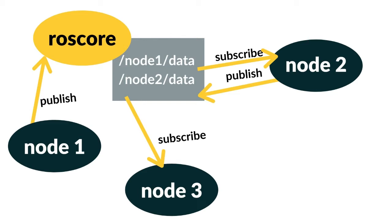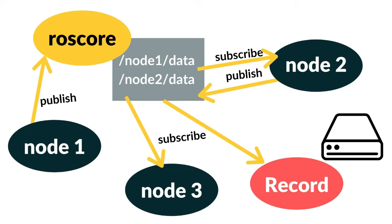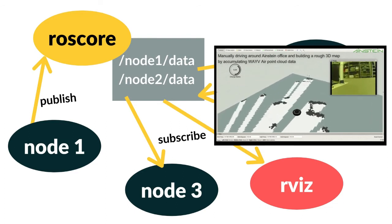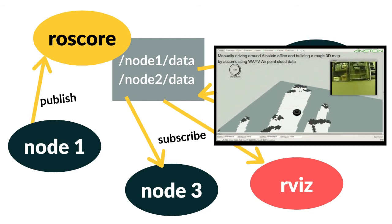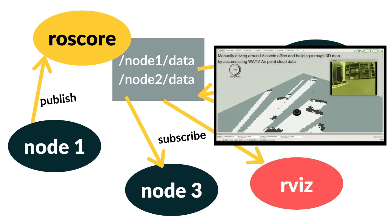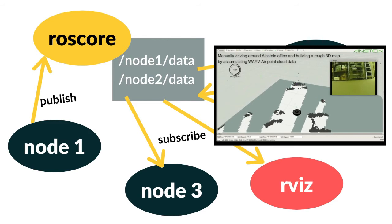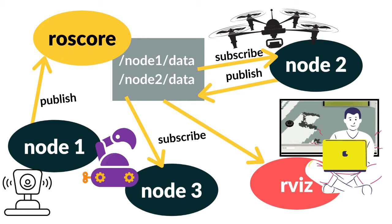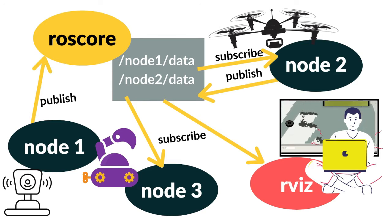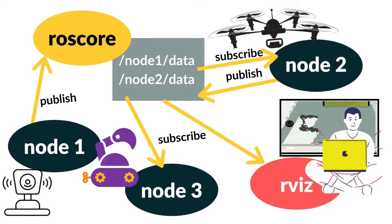That's the basic ROS network setup, but there are also specialized nodes. For example, we can record any or all data on the network using the ROS bag package, which gives us time-synchronized data that can be played back later for introspection. The RViz node lets us subscribe to any topic and visualize the data — for example, 3D point cloud data from one of our radars. You can imagine this quickly evolves into a full setup: a drone flying overhead communicating with a ground rover with a Velodyne LiDAR doing mapping, recording in the cloud, with a ground station control laptop to visualize and send high-level commands.